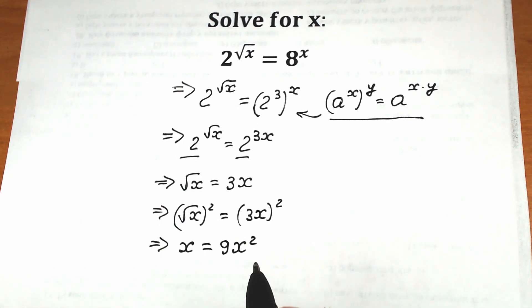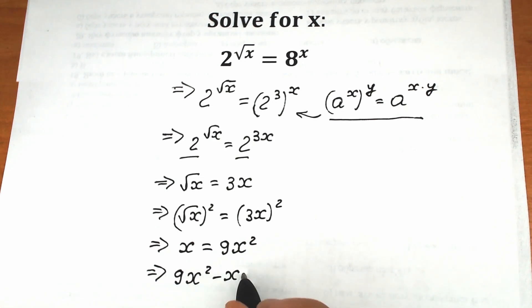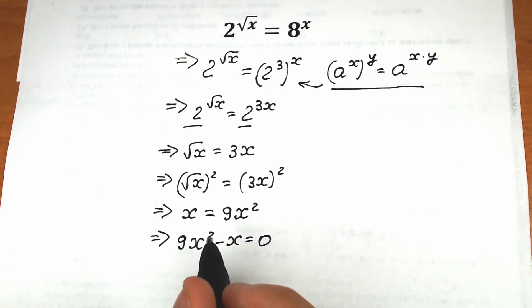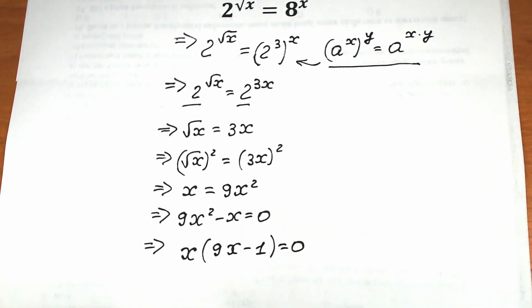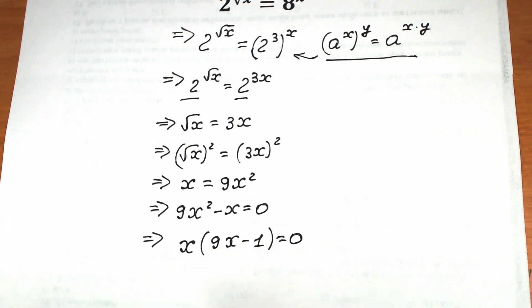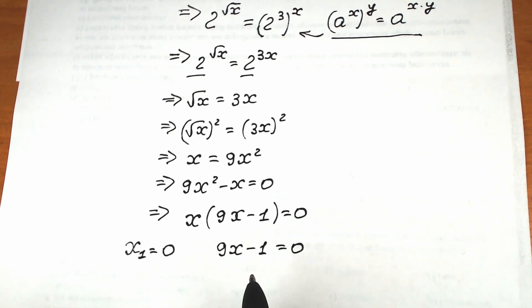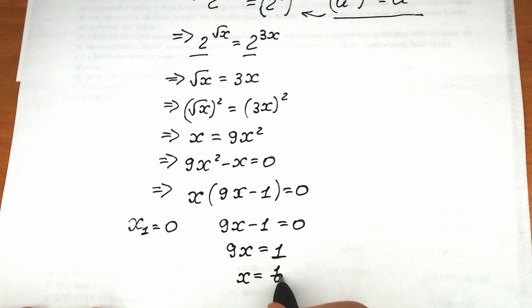This is a quadratic equation without a constant term c. It's better to bring everything to one side: 9x squared minus x equals zero. Now let's factor out x: x times (9x minus 1) equals zero. A product equals zero when the first expression equals zero or the second equals zero. So x₁ equals zero, or 9x minus 1 equals zero, giving 9x equals 1, so x₂ equals 1 over 9.